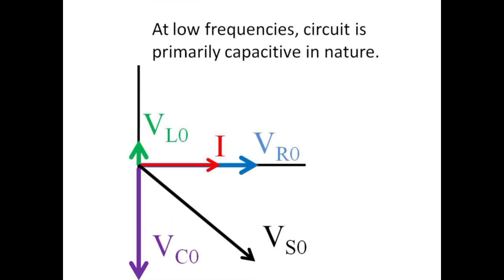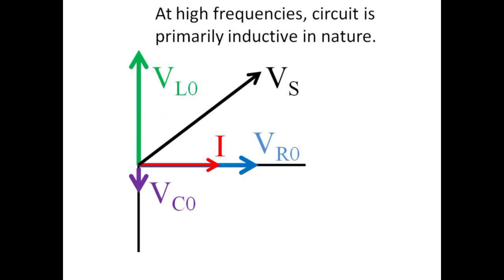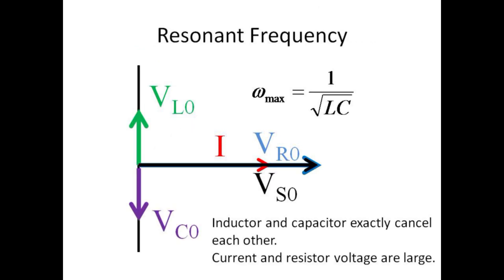To summarize, at low frequencies, the capacitor dominates the circuit and has the largest voltage drop. At high frequencies, the inductor dominates the circuit and has most of the voltage drop. At the resonant frequency, the inductor and capacitor cancel each other out. The resistor voltage equals the entire source voltage, the impedance is at a minimum, and the current is a maximum.